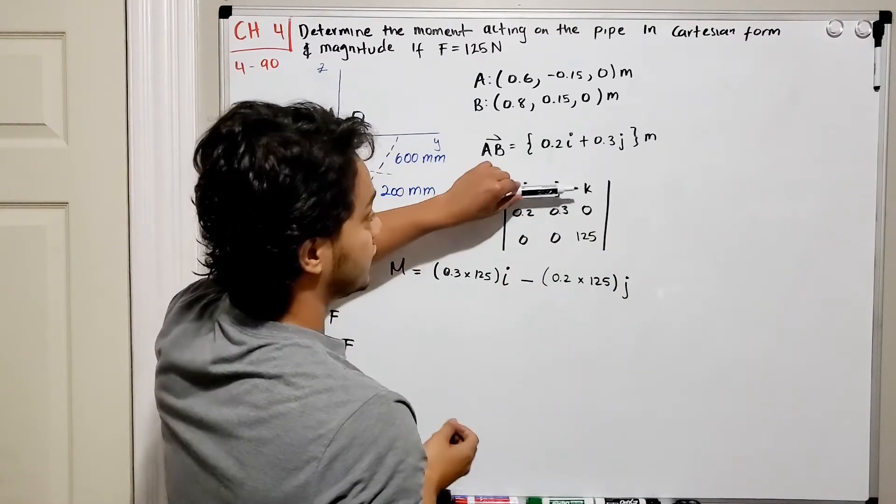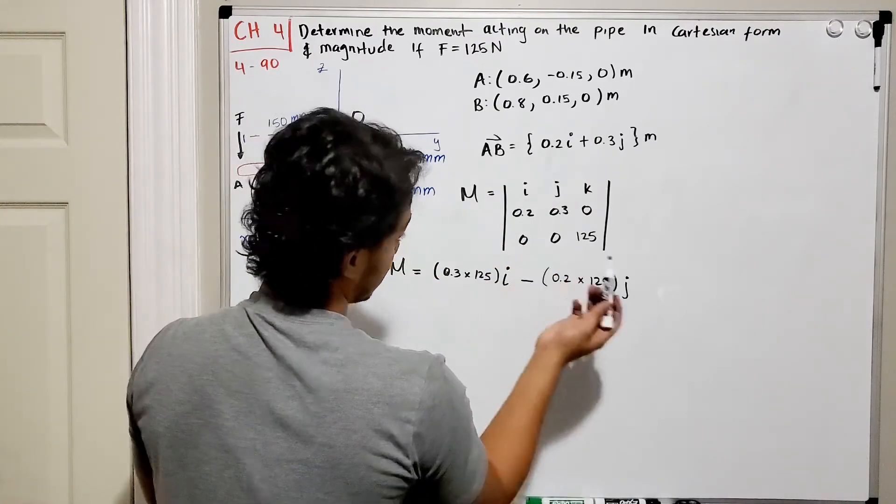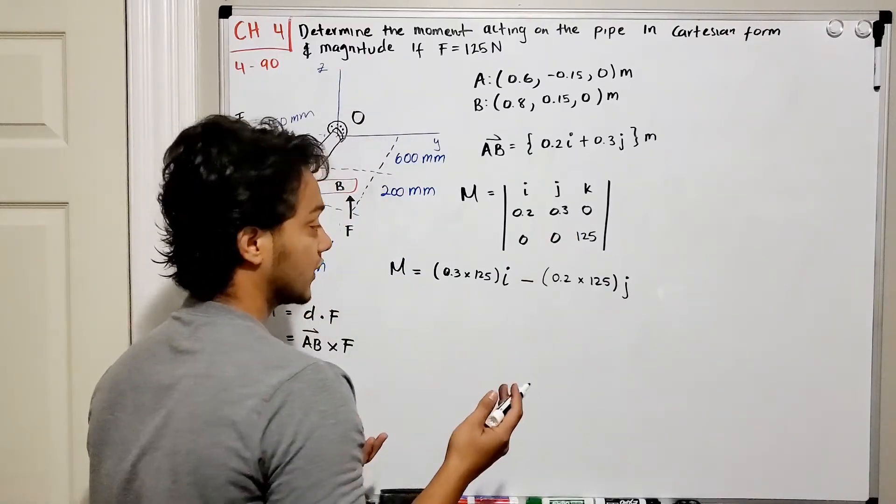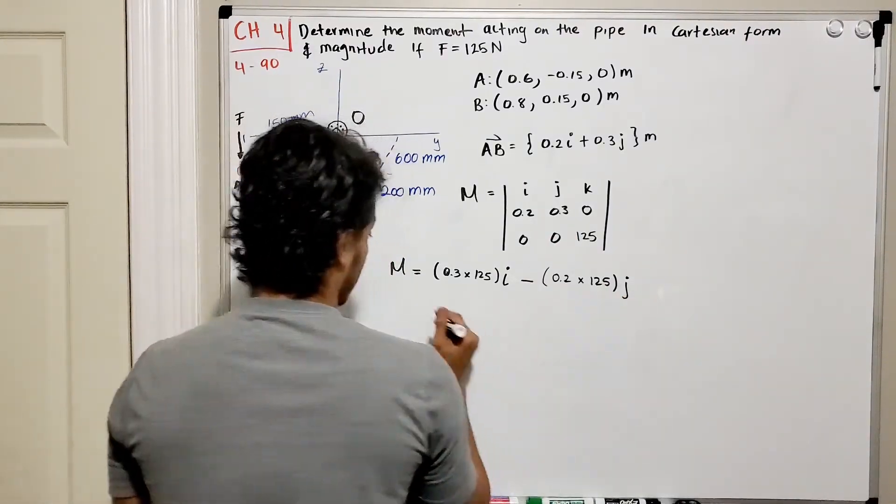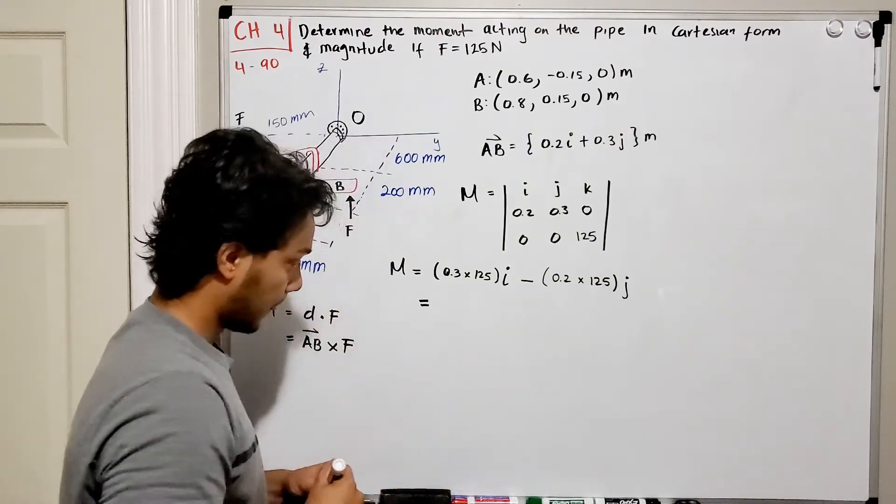Last in the k-direction we'll have, so we hide this column and we hide this row, and we're going to multiply 0.2 multiplied by 0 gives me 0, 0 multiplied by 0.3 gives me 0, so I have nothing in the k-direction. So if we do this we have our answers.